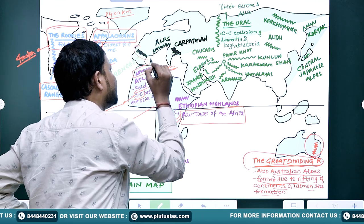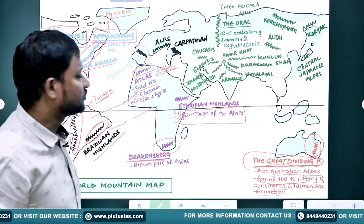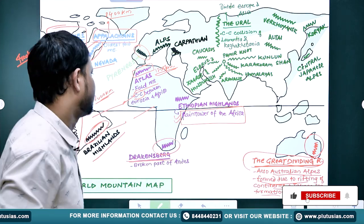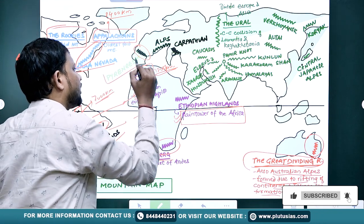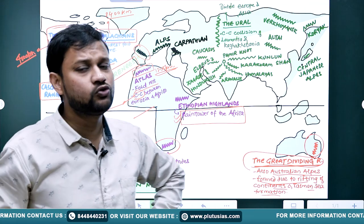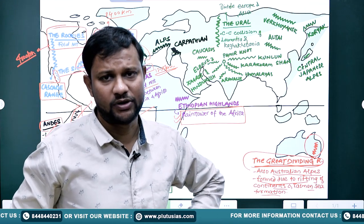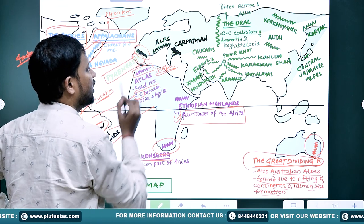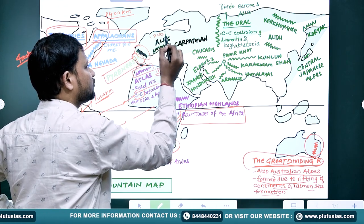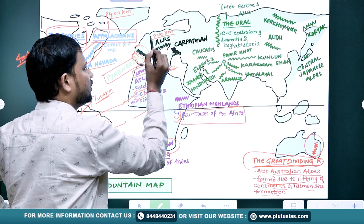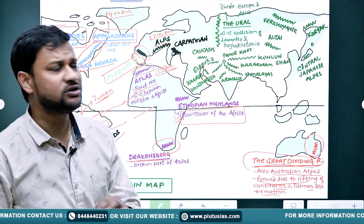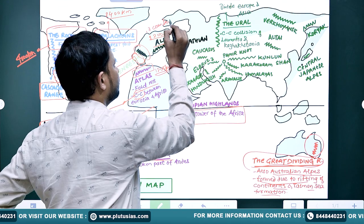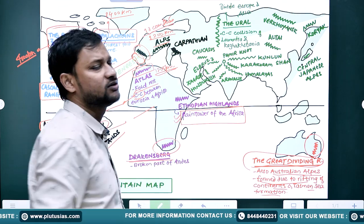Now for Europe — the Pyrenees mountain range separates Spain and France, running northwest to southeast along the Iberian Peninsula. Next, stretching about 1,200 kilometers across 13 countries, is the Alps — the 'brother mountain' of the Himalayas and the top mountain range in Europe.